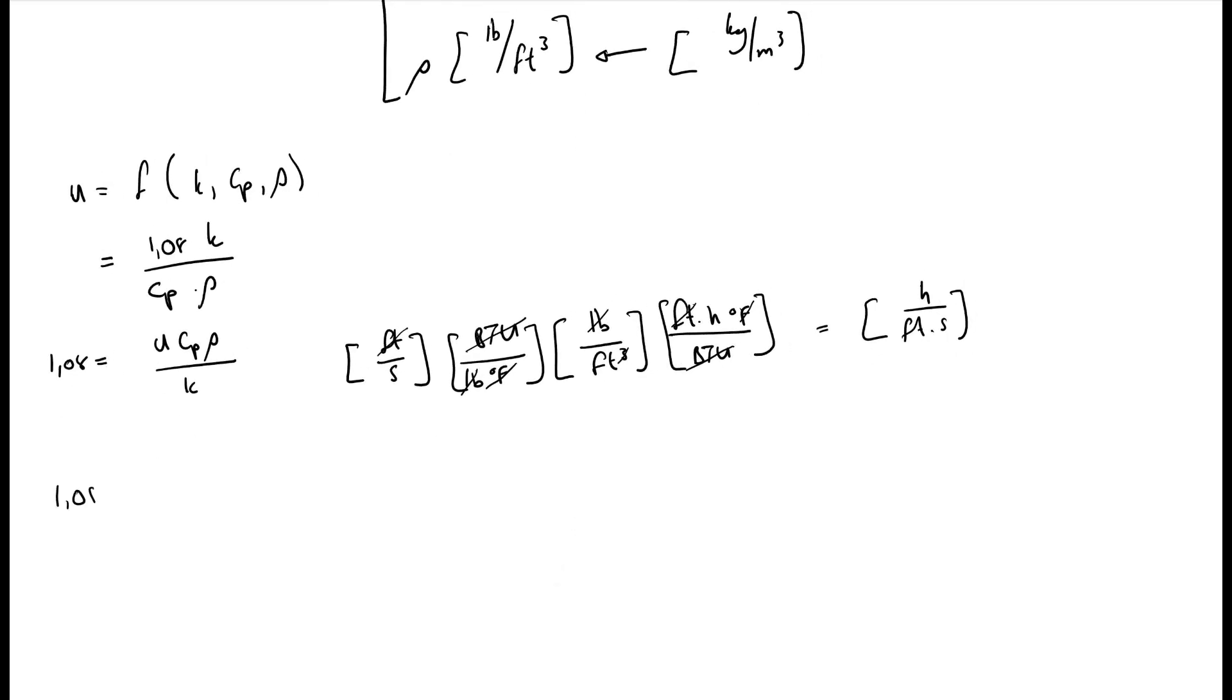So this is in units of hours over foot second. We now convert one hour to 3600 seconds. That cancels out. We go one foot to 0.3048 meters. That cancels out. That cancels out. And we have a value of 12,756 one over meters.